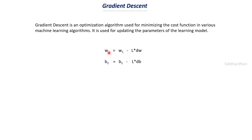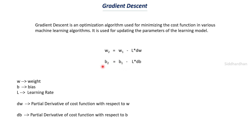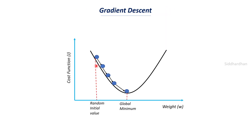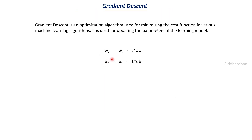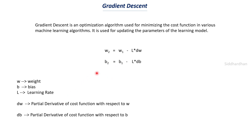The gradient descent update formulas are: w2 = w1 minus l times dw, and b2 = b1 minus l times db. Here w is weight, b is bias, and l is the learning rate — the amount of change applied to weight and bias. dw is the partial derivative of the cost function with respect to w, and db is the partial derivative of the cost function with respect to b.